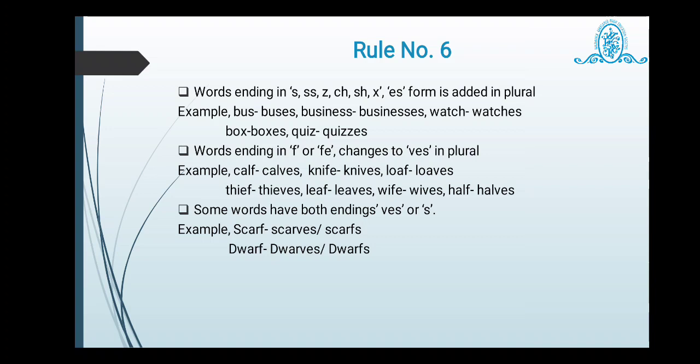Next rule is here. Words ending in F or F-E changes to V-E-S in plural form. For example, calf. This word ends with F, so it is changing into the V-E-S. So the spelling will be calves. Knife, knives. Loaf, loaves. Here F is removed. F-E is removed. Thief, again F we have to remove. So instead of that, thieves. Leaf, leaves. Wife, wives. Half, halves. Some words have both endings like V-E-S or S also. Let us, we will see the words. Scarf, scarves, scarves. Also you can say in plural words, scarves or scarfs. Dwarf, you can say dwarves or dwarfs. So these are the rules for making any word plural.